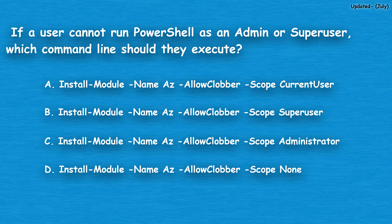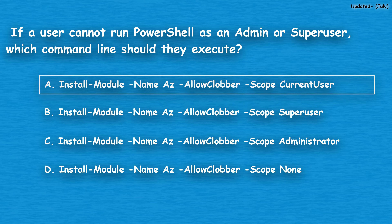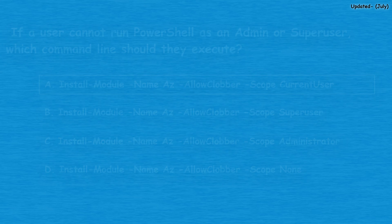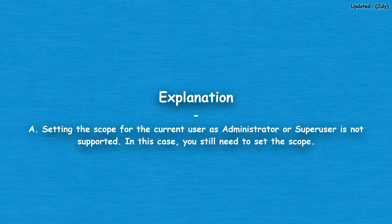The correct answer is option A: Install-Module -Name Az -AllowClobber -Scope CurrentUser. Setting the scope for the current user as administrator or superuser is not supported. In this case, you still need to set the scope.